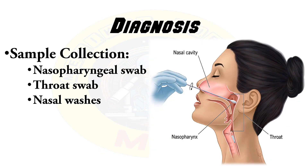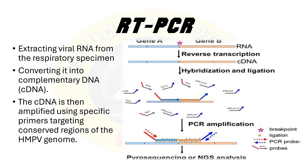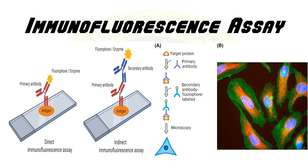Accurate diagnosis of HMPV infection is crucial for appropriate patient management. The diagnostic process begins with the collection of respiratory specimens, commonly including nasopharyngeal swabs, throat swabs, and nasal washes. One of the primary diagnostic methods is reverse transcription polymerase chain reaction, RT-PCR. This technique involves extracting viral RNA from the respiratory specimen and converting it to complementary DNA or cDNA using reverse transcriptase. The cDNA is then amplified using specific primers targeting conserved regions of the HMPV genome. RT-PCR is highly sensitive and specific, allowing detection of low viral loads, and is the gold standard for HMPV diagnosis, providing rapid and accurate results. A positive RT-PCR result confirms the presence of HMPV RNA in the specimen.